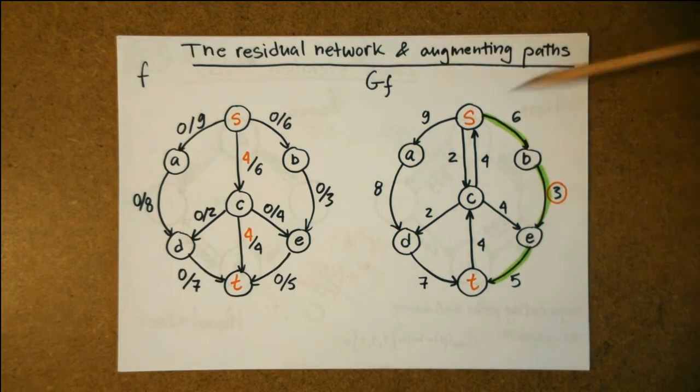An augmenting path is simply a path from the source S to the sink T in the residual network so this may include reversed edges. The smallest edge capacity along an augmenting path determines the capacity of the path itself called the residual capacity as it is not possible to propagate a greater amount through that path. Such an edge of minimum capacity is called a critical edge.